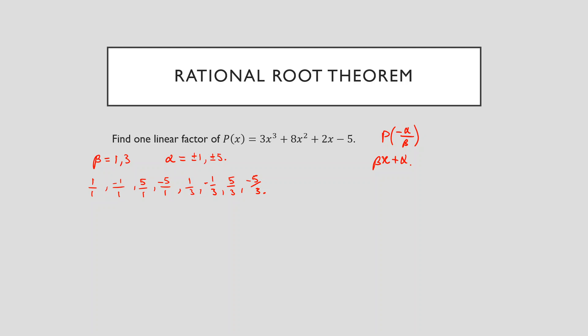What we have to do is substitute each of these fractions into our polynomial and figure out which one gives a remainder of zero. As it turns out — and you can try this yourself — the ones with denominator three don't work one by one, all the way until the last one. That's why I don't want to go through and test every single one, because we'd be here forever. I'll just show you that the last fraction, p(-5/3), does in fact work.